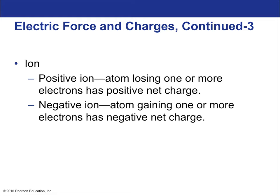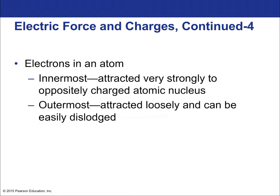An ion—a positive ion—is an atom that has lost one or more electrons, giving it more positive charge than negative charge, resulting in a net positive charge. A negative ion is an atom that has gained electrons and thus has a net negative charge.